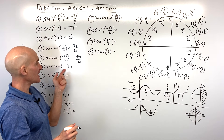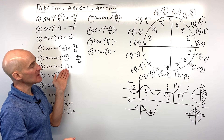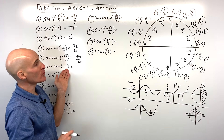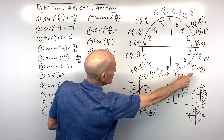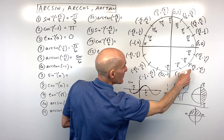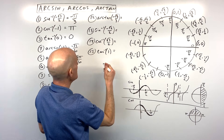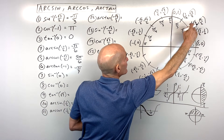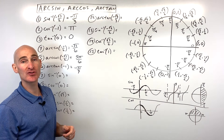For number six, the arc tangent of negative one — this is saying tangent of what angle equals negative one. On the unit circle, tangent is y divided by x: negative divided by positive is negative one. So the answer is negative pi over four. Remember, we're restricted from negative pi over two to positive pi over two when doing sine inverse or tangent inverse.